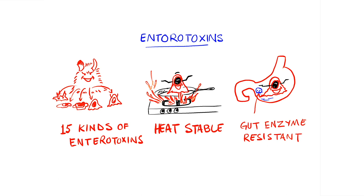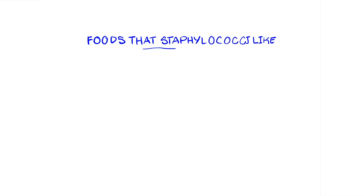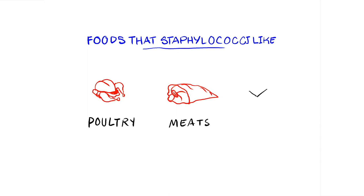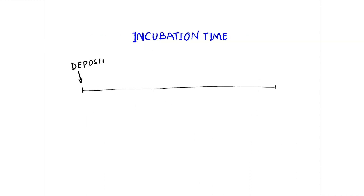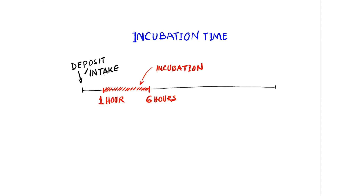Staphylococci produce enterotoxins on meats, carbohydrates, and dairy products. They deposit them on poultry, other meats, cheese, and dairy products. These are the kinds of foods that when eaten can contain preformed Staphylococcal enterotoxin, which will cause food poisoning. The incubation time once Staphylococci are deposited on food is anywhere from 1 to 6 hours, some say 2 to 8 hours. During that incubation time, the Staphylococci start growing and depositing the enterotoxins.